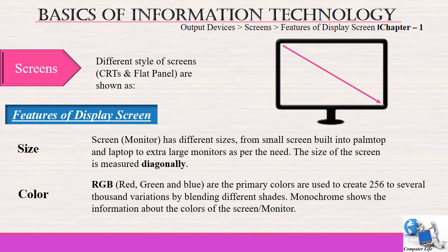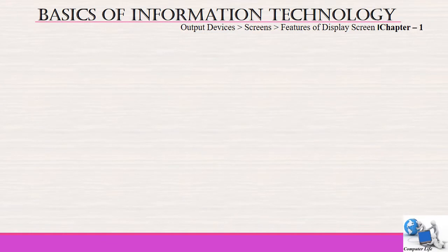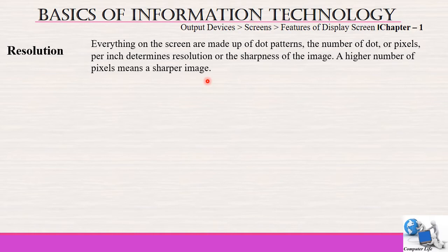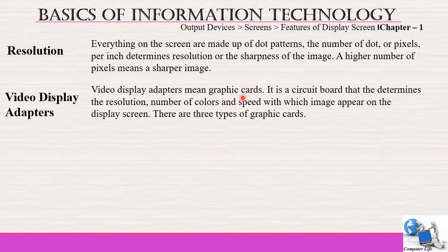The next feature is resolution. Resolution means everything on the screen is made up of dot patterns. The number of dots or pixels per inch determines resolution, or the sharpness of the image. A higher number of pixels means a sharper image — as the pixels are tightly joined to one another it shows high quality images. The next feature is the video display adapter, or graphic card. It is a circuit board that determines the resolution, number of colors and the speed with which images appear on the display screen.